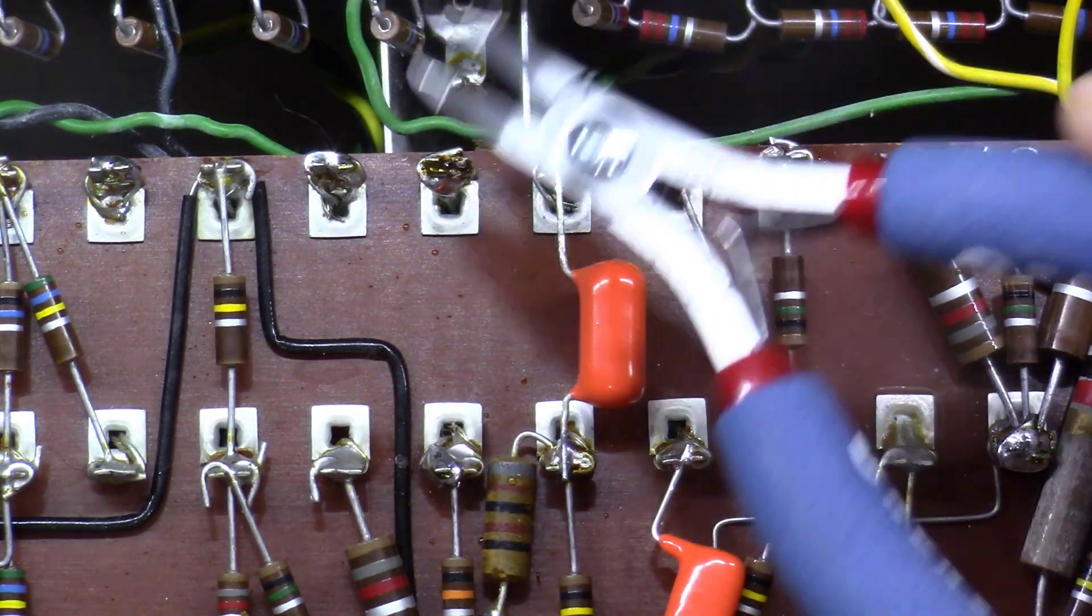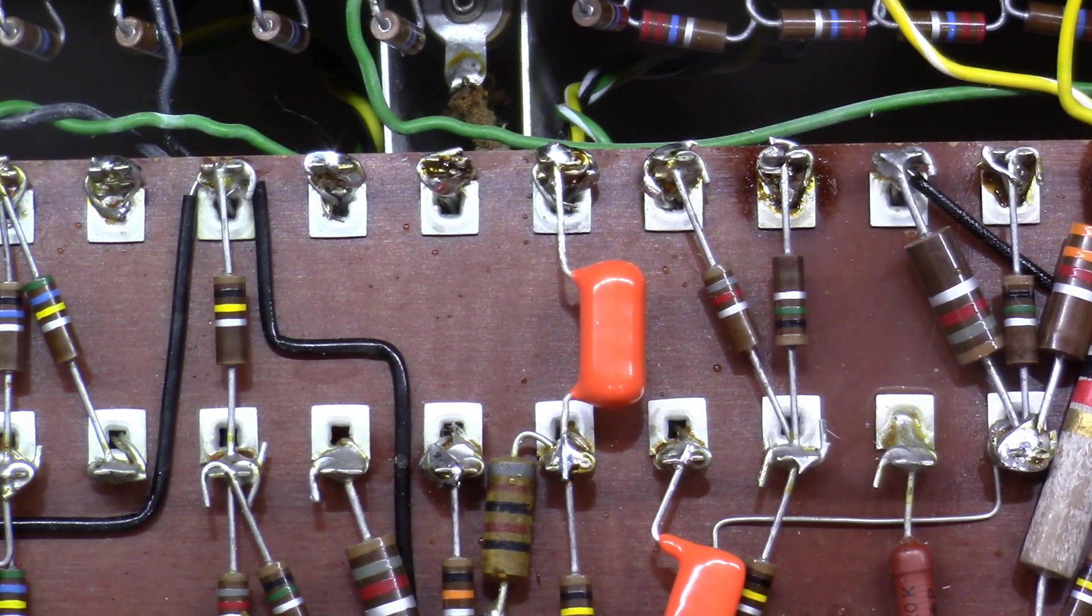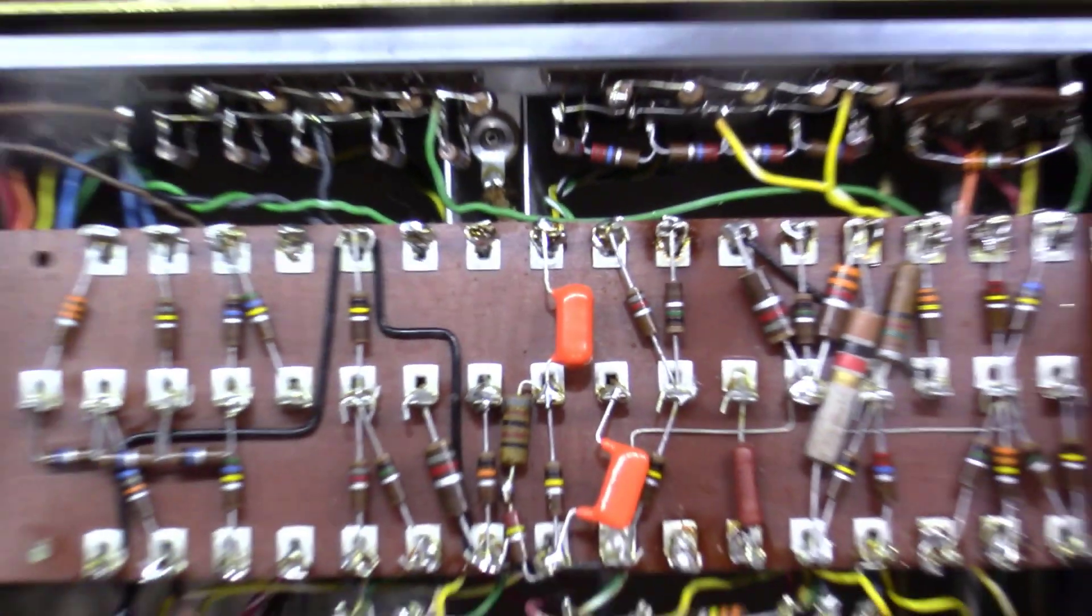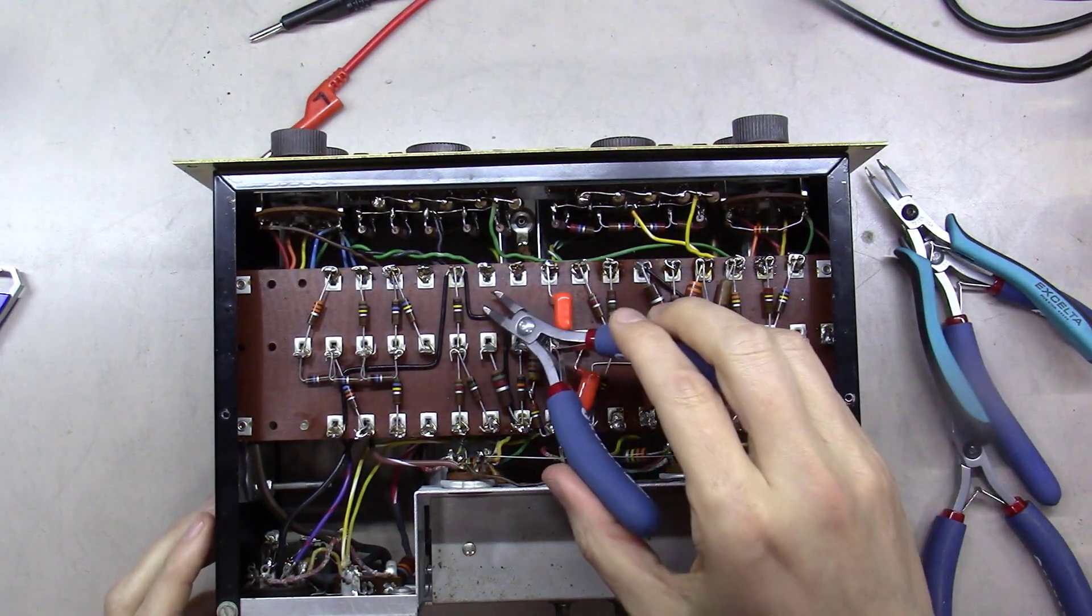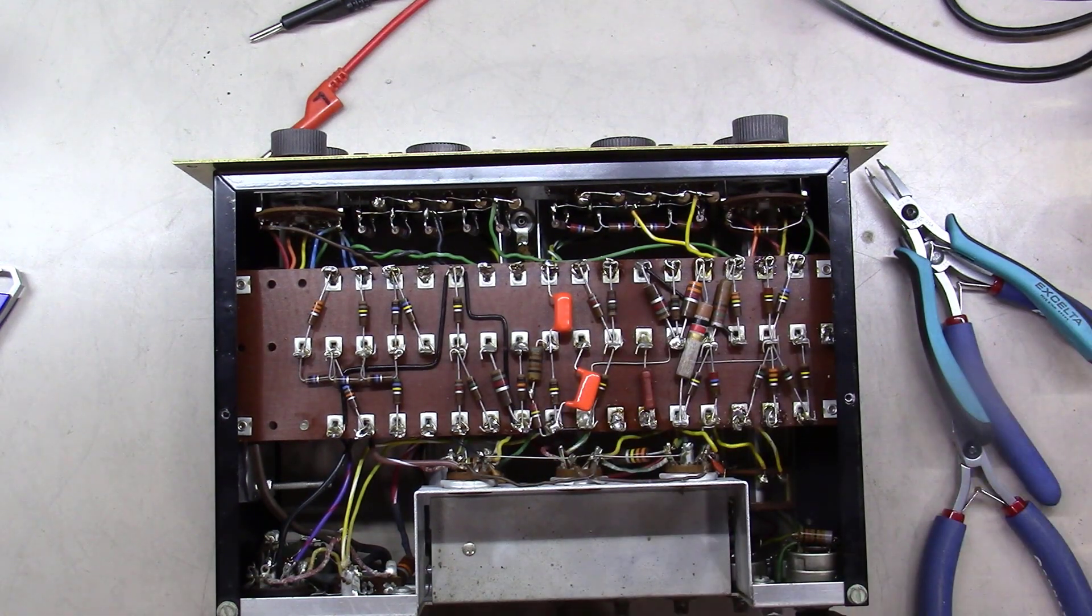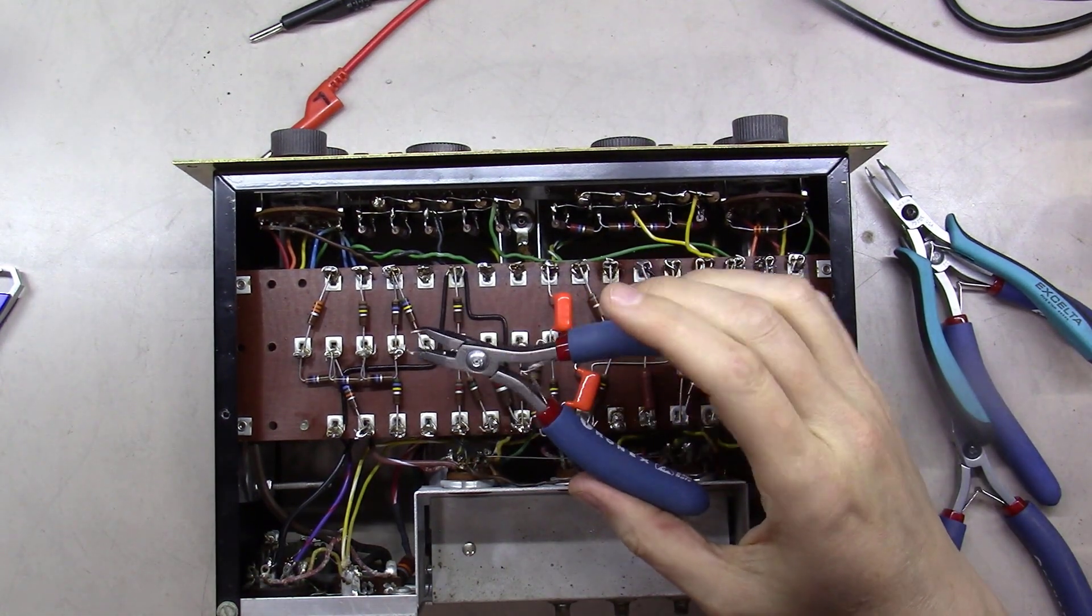So just another example - this is an old Macintosh C8 amplifier here where, you know, different tool for different job. And if you've got all the right tools, it makes your job much easier.